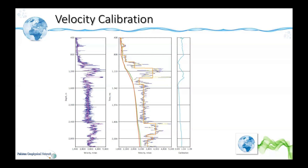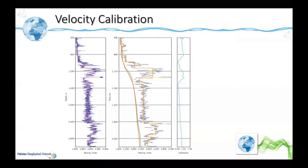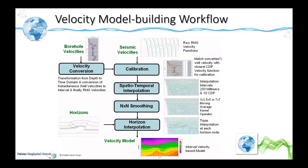Once we have the velocity calibration curve, we multiply all velocity functions to scale them to the well velocities. If we have multiple wells, we generate multiple calibration curves, grid them, and at each CDP location we multiply the velocity functions derived from seismic velocity analysis. This is the overall workflow for velocity model building. The two major inputs are the seismic velocities — raw RMS velocities along the 2D seismic section from velocity analysis — and the borehole velocity, which can be a VSP or a sonic log.